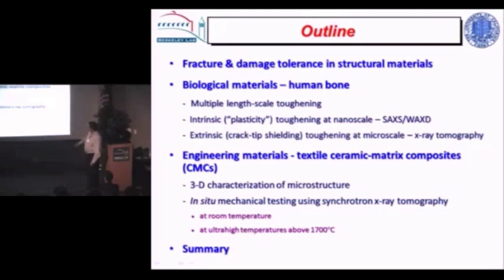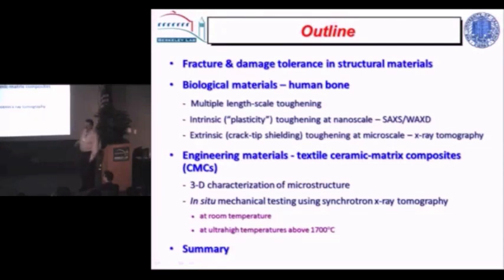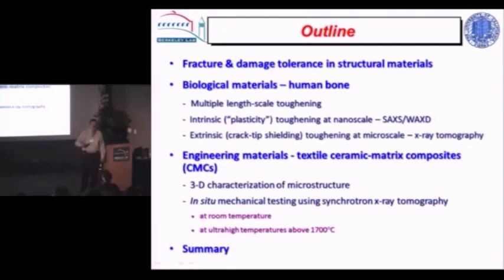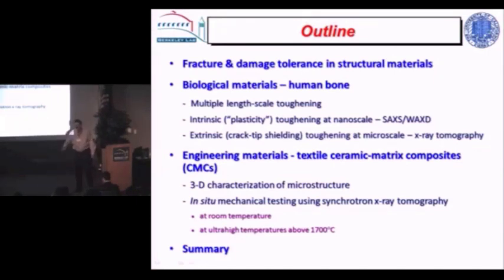At the nanoscale we use SAXS, and at coarser scales we use tomography. The second part covers engineering structural materials — the latest ceramic matrix composites that are going to revolutionize gas turbine engines. These have been mission impossible for the last 20 years and are suddenly happening. We're going to see a ceramic engine probably on a commercial aircraft in the next 10 to 20 years. We'll look at how we characterize their structure and examine fracture mechanisms at extraordinarily high temperatures using the tomography line at the ALS.